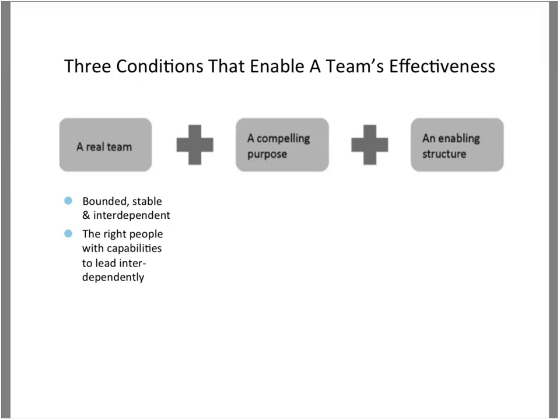To recap: a real team with the right people means putting the conditions in place to establish a team that's bounded, stable, and interdependent, with the right collaborative and diverse people — both internally within the clinical team and externally as you partner with others in moving out to various target populations. Ask yourself: do you have those things in place, and what could you do to put them in place? How can your team together surface conversation around being bounded, stable, and interdependent?